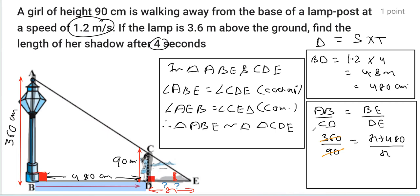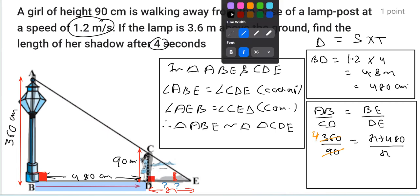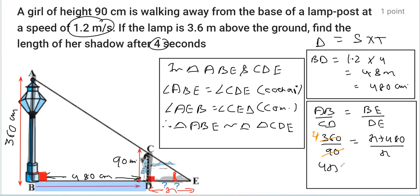Now by cross multiplication, we get 4X is equal to X plus 480. That implies 3X is equal to 480.